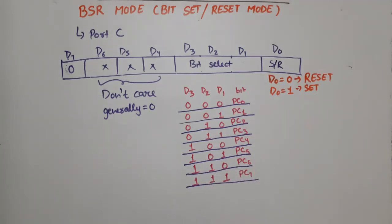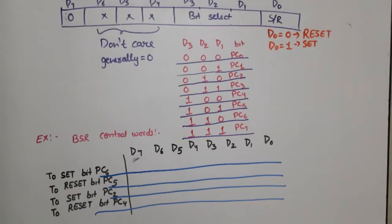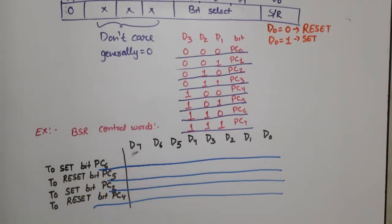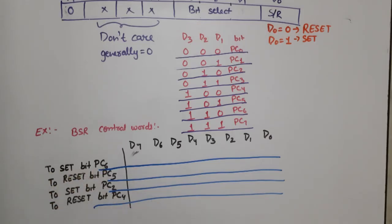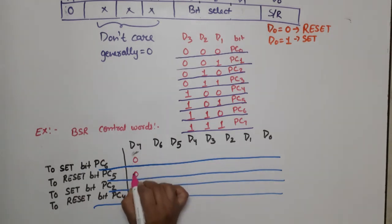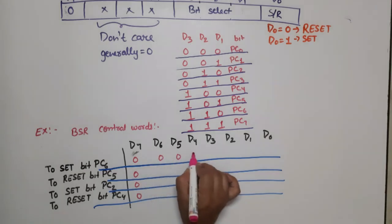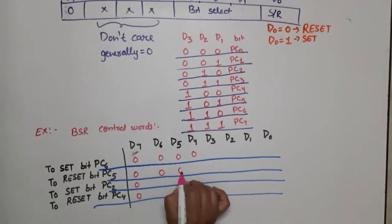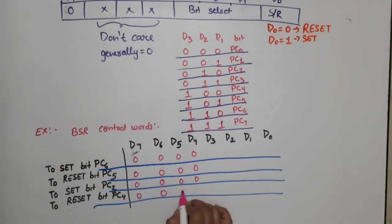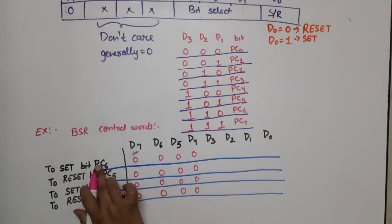Now let's do four examples and write the BSR control word for each. For BSR mode, D7 is always 0, and the don't care bits D6, D5, D4 we set to 0.